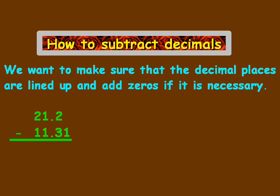Let's take a look at this example below here. We have 21.2 minus 11.31. The first step in solving this equation would be to add a zero, in this case, to the 21.2, so it's 21.20.